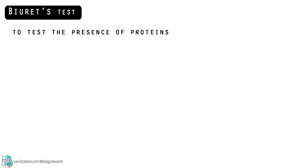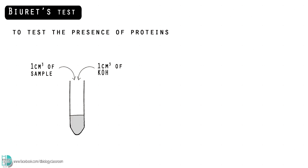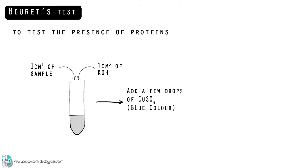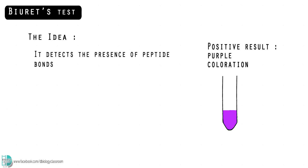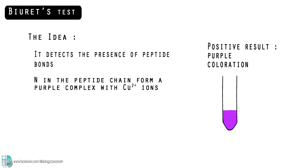The test for proteins is called the Biuret test. First, add equal amounts of sample and potassium hydroxide solution to a test tube. Mix them well and add a few drops of copper sulfate solution. A purple coloration shows the presence of proteins. This is a test for peptide bonds — in the presence of dilute copper sulfate in alkaline solution, nitrogen atoms in the peptide chain form a purple complex with copper ions.